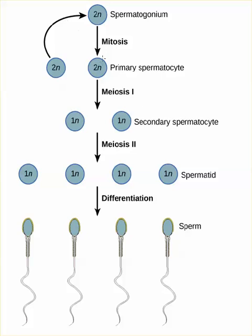We start again with our 2N cell. That 2N cell will undergo meiosis 1, reductional division, to produce two cells that are 1N. Then we have meiosis 2, which is equational division, and this is where the math can drive students crazy. They go: how does a 1N cell separate into two 1N cells? Why isn't it one-half N, one-half N?